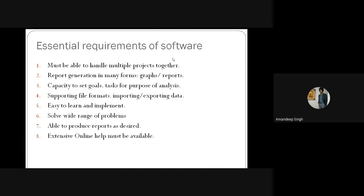The essential requirements of the software must include the ability to handle multiple projects — we have to invest one time in the project management system software and purchase software that is able to handle multiple projects. Second, it should generate different types of reports — those could be in the form of graphs, histograms, line graphs, Gantt charts, or line of balance technique — reports that can be easily read and understood to show what is happening inside the project.